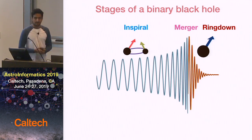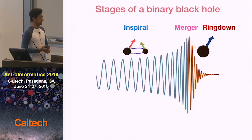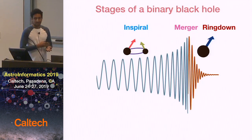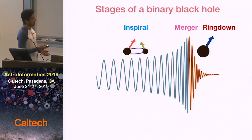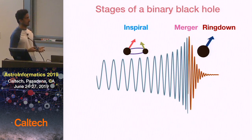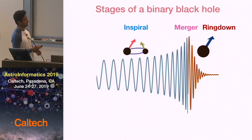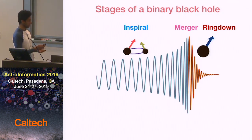What you have after merger is a highly distorted single black hole. All of these distortions are quickly radiated away in the final part of the signal, which is called the ring down. And what you have left finally is a single curved black hole.